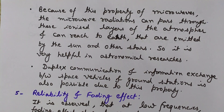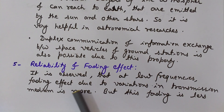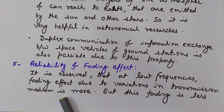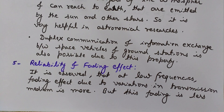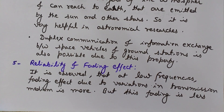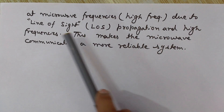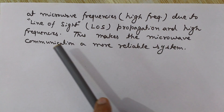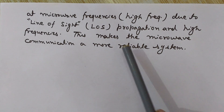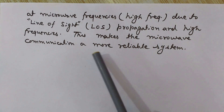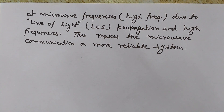Regarding reliability and fading effect: at low frequencies, the fading effect due to variations in the transmission medium is more. Since the frequency of microwaves is high, this fading effect reduces. At microwave frequencies, due to line-of-sight (LOS) propagation and high frequencies, the fading effect is reduced, making microwave communication a more reliable system.